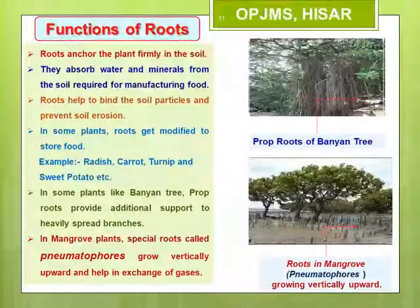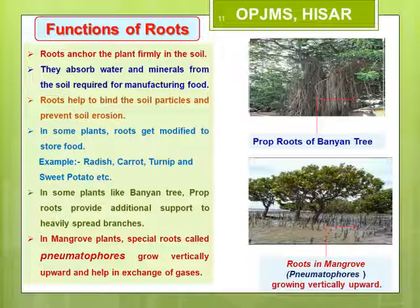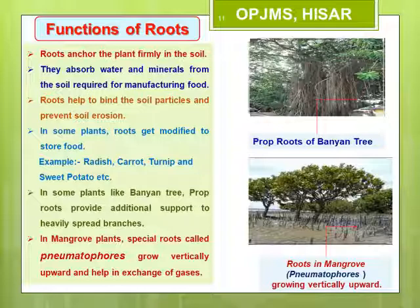Now let us discuss the main functions of roots. The first function is fixation: roots spread out into the soil and hold the plant firmly to the ground, preventing the plant from being pulled out or blown away by the wind. The second function is absorption and conduction: roots absorb water and minerals from the soil and pass them to the stem, which the plant uses for manufacturing food and carrying out basic life processes.